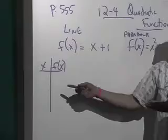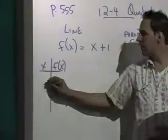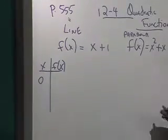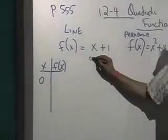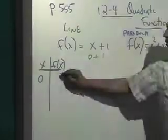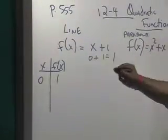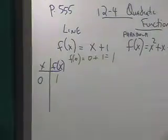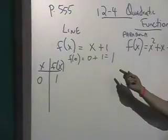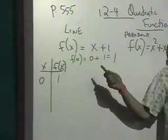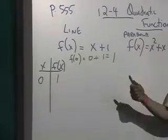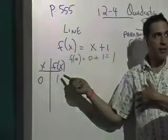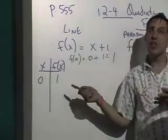You guys remember this from first semester, chapter 7. If I put in a value for x as input, like 0, what will I get for our y value or our f of x value? We'll get 0 plus 1 equals 1. So f of 0, the value of the function at 0, is equal to 1. Kind of reminds you of x and y — it's the same thing. f of x, the value of the function at x, is the same thing as y.